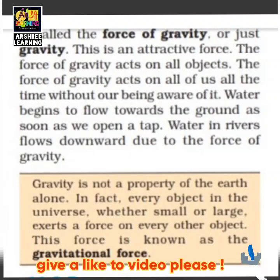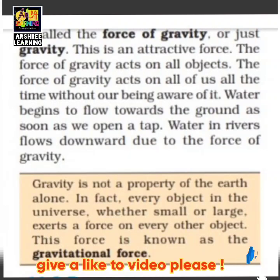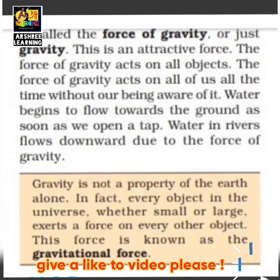The question arises: if all objects are pulled towards each other, why don't two chairs kept nearby stick to each other? Newton explained that gravitational attraction depends on the size (mass) of the objects. Only very large objects — like the earth and moon — are visibly pulled towards each other. Objects we see around us are not large enough to noticeably attract each other.